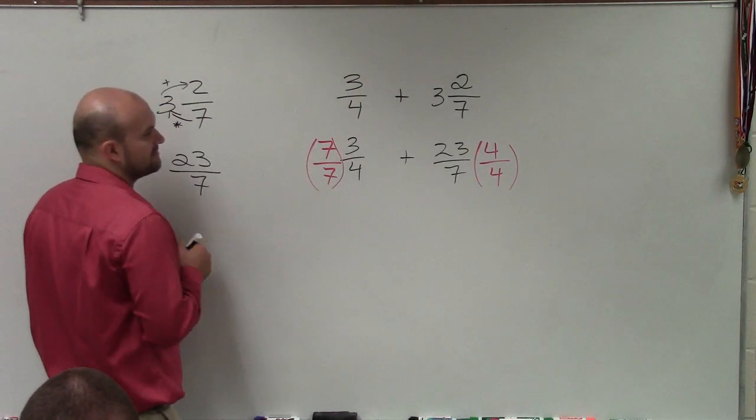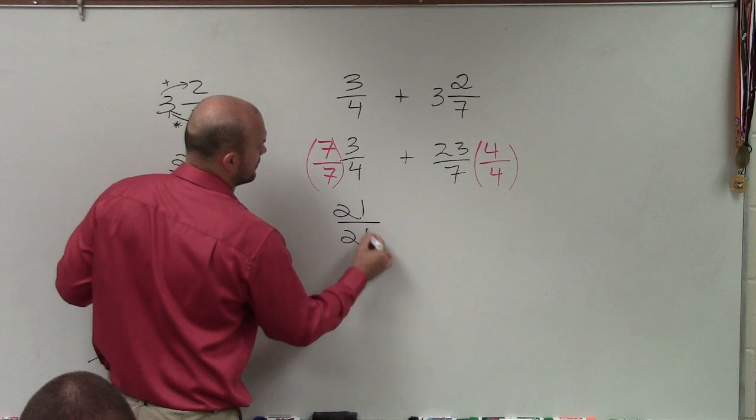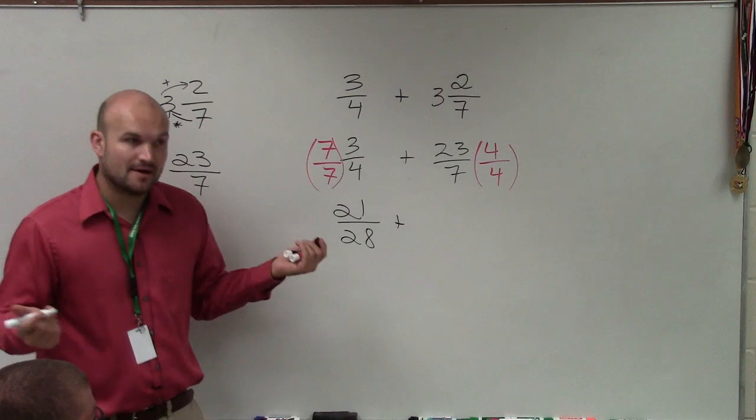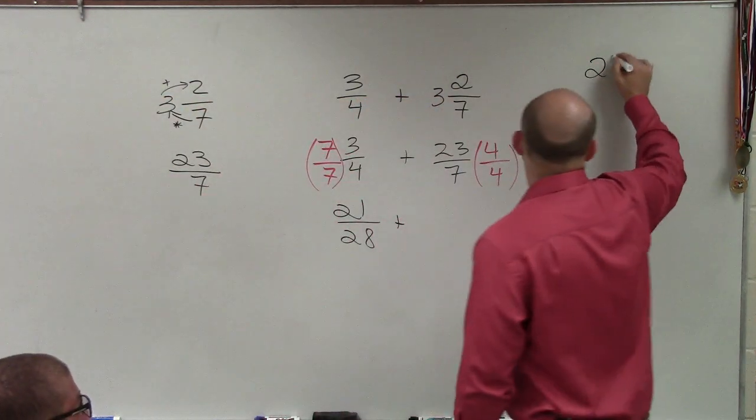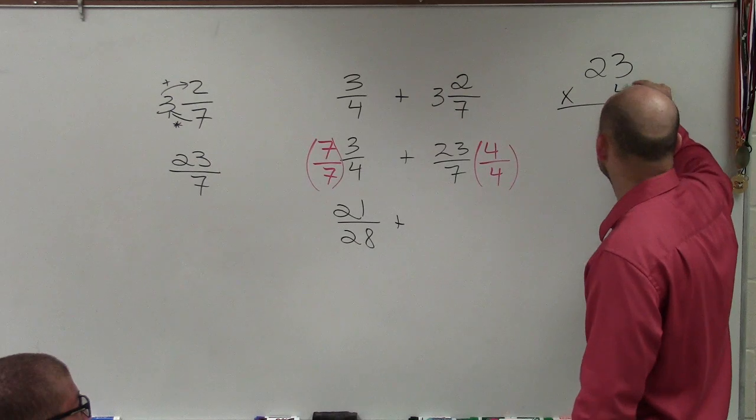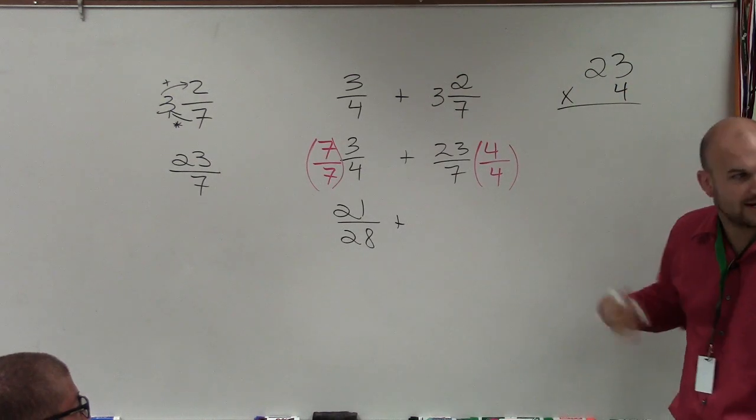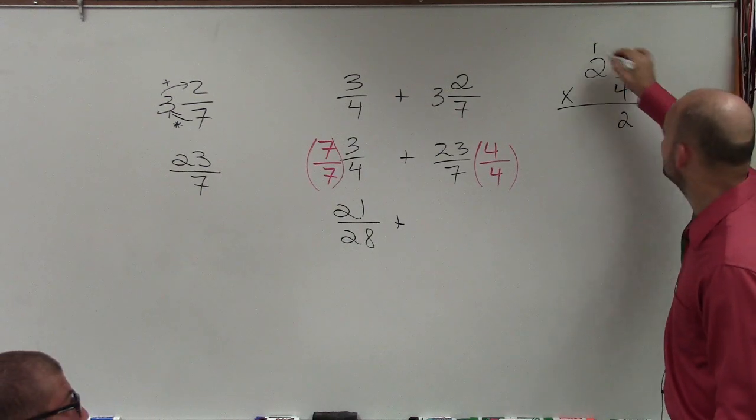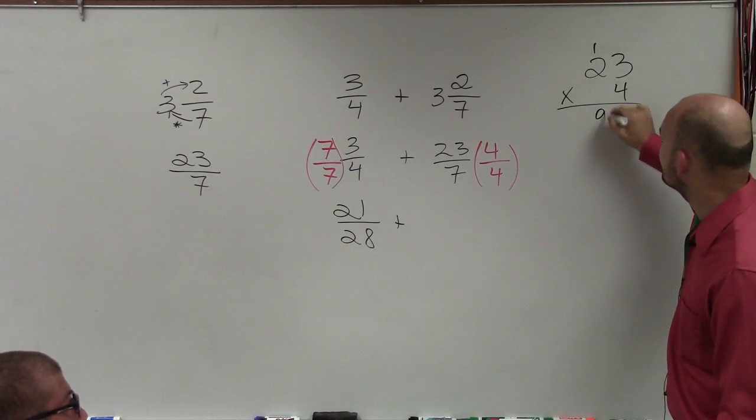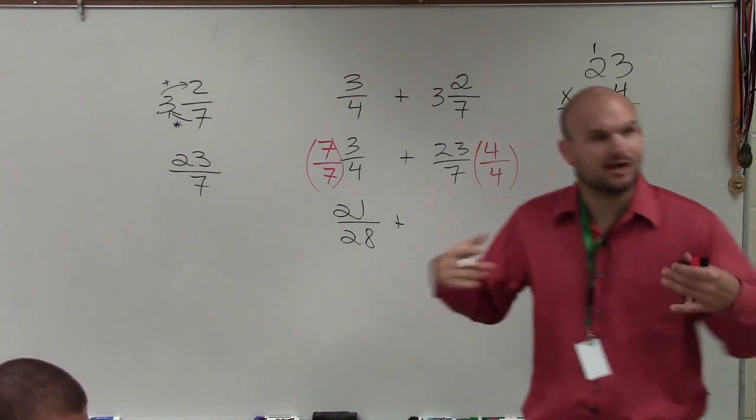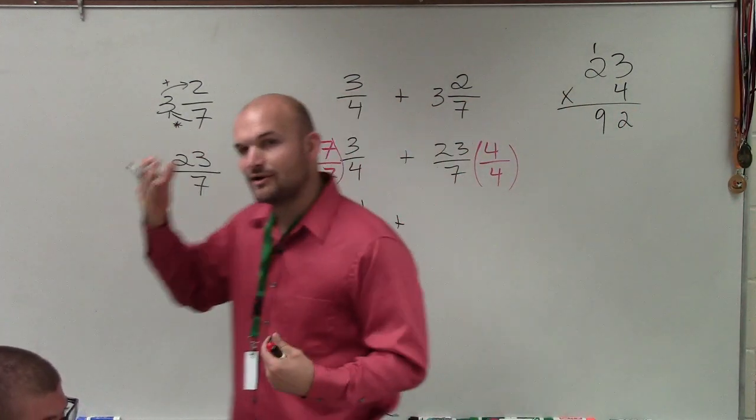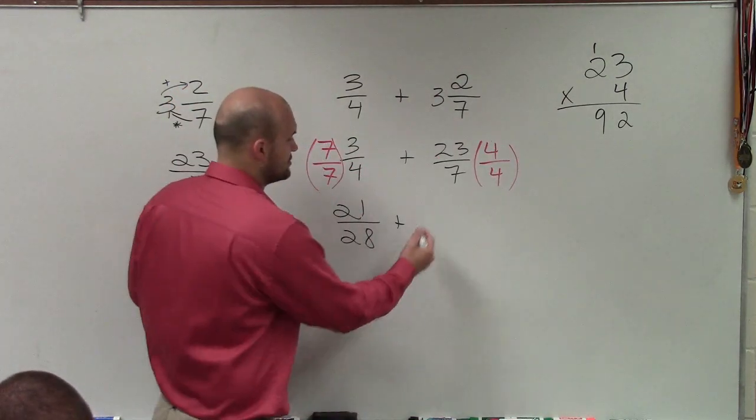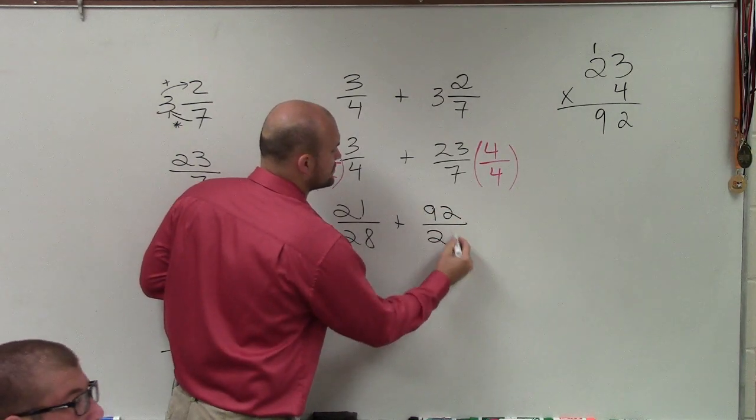So now let's multiply 7 times 3 is 21 over 28, plus 23 times 4. Let's pretend you don't have your calculator. You guys can easily just do this. If you can't do it in your head, 4 times 3 is 12, 4 times 2 is 8, plus 1 is 92. Just go back to our multiplication algorithm that we've been practicing. So that becomes 92 over 28.